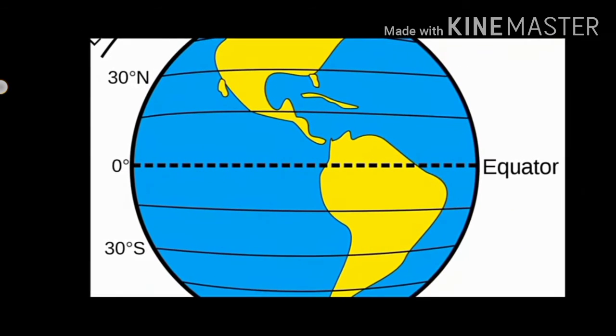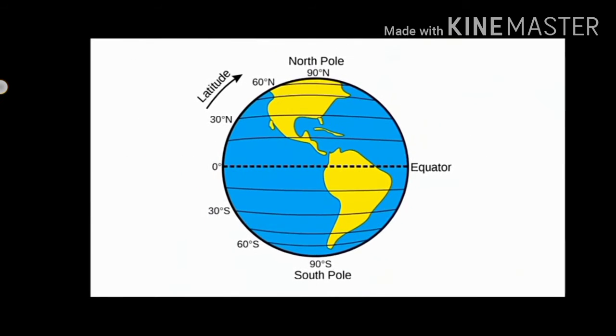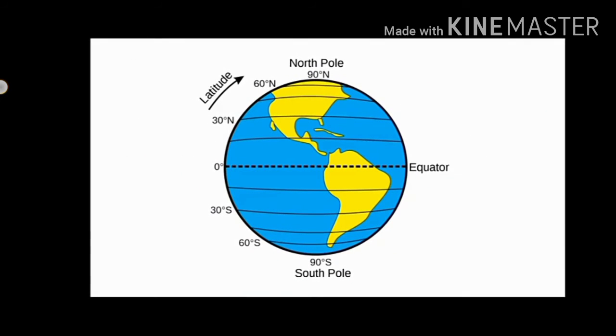It is marked as zero degree. It divides the earth into two equal parts. The northern part is known as northern hemisphere and southern half is called southern hemisphere.